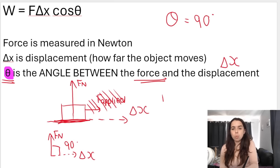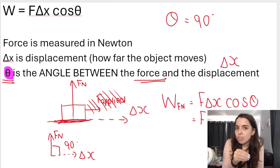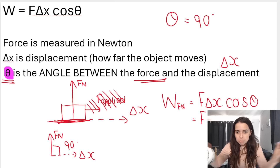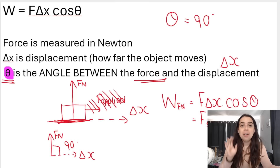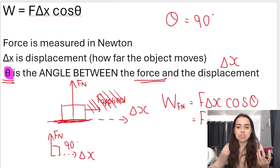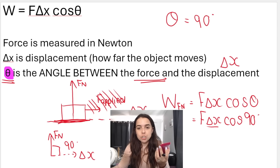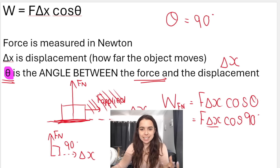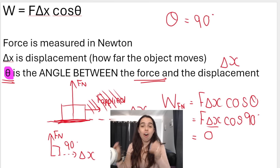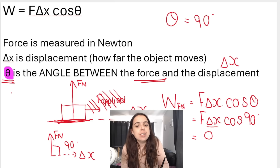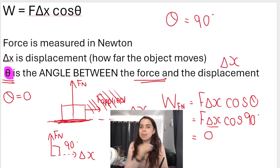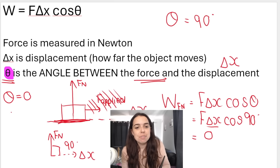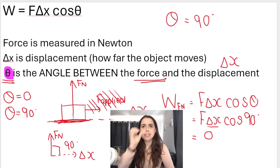When you work out the work done by the normal force, you substitute into the formula. The normal force goes in the place of F, the distance goes in the place of Δx, and the angle is 90 degrees. Type cos 90 into your calculator — you get zero. So the normal force does not do any work on the box. If theta is between 0 and less than 90, it's positive work. If theta is exactly 90, cos 90 = 0, so no work is done.